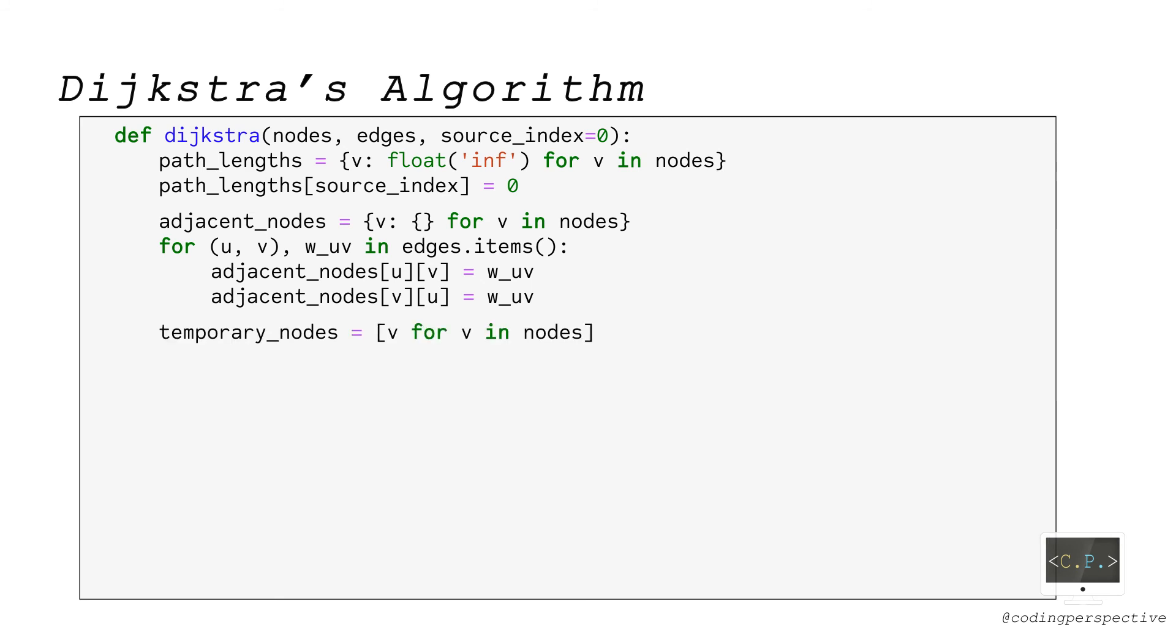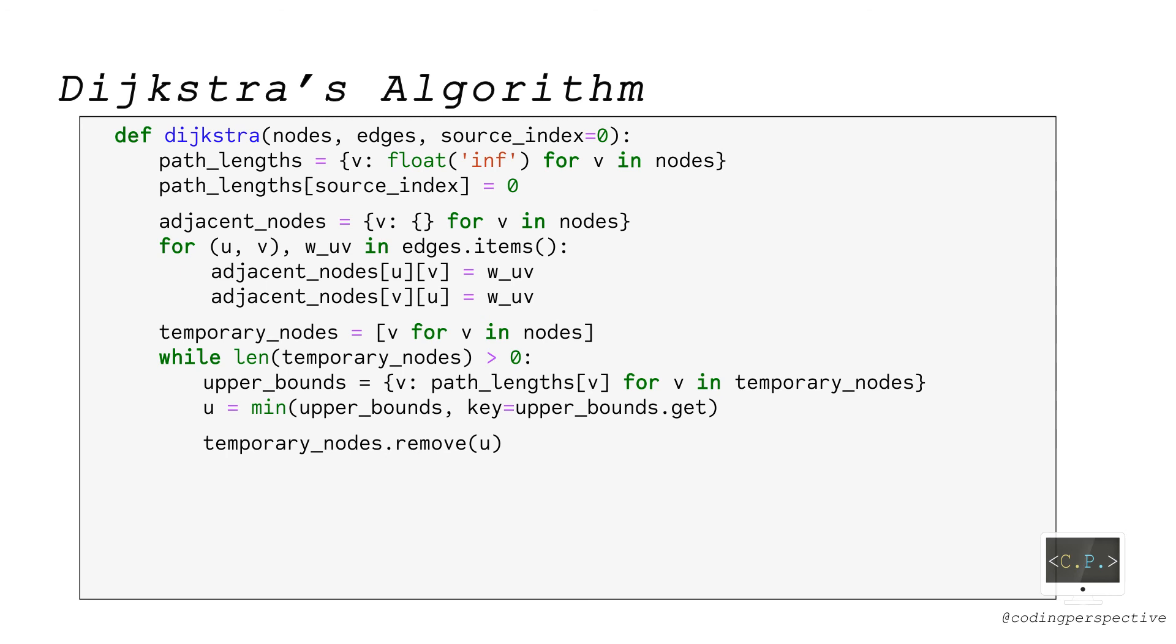After initializing temporary nodes list with all the nodes, we iterate until there is no temporary node left. At each iteration, we first find the temporary node with the smallest path length called u in our function, then remove u from the temporary nodes list. Lastly, we update the path length for each temporary adjacent node to u.